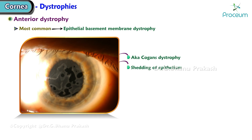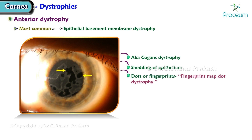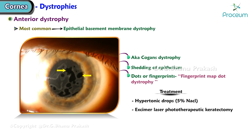It is characterized by the shedding of epithelium and appears as dots or fingerprints, therefore also known as fingerprint map dot dystrophy. Treatment includes hypertonic drops — 5% sodium chloride — and in some cases, excimer laser phototherapeutic keratectomy can be done.